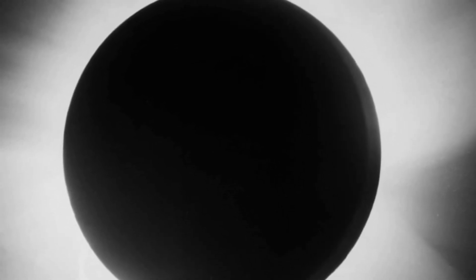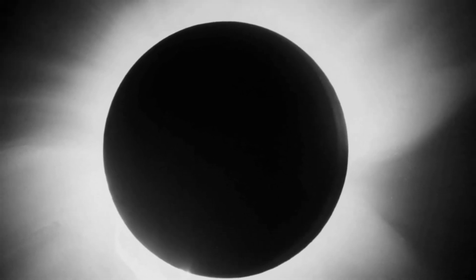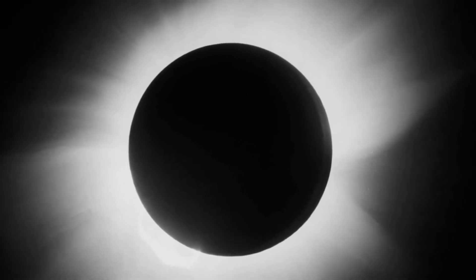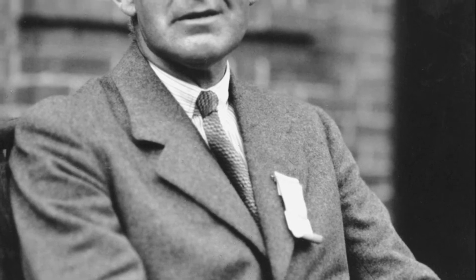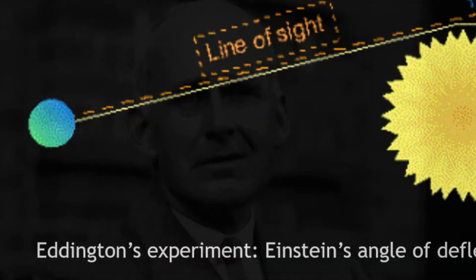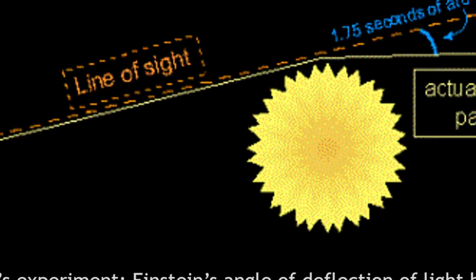Eddington received several scholarships as a result of his aptitude. He received both a bachelor's and master's degree before moving to Cavendish Laboratory to conduct research on thermionic emissions. When he was nominated to the post of chief assistant to the Royal Greenwich Observatory's Astronomer Royal, he created a new method for gathering statistical evidence based on the drift between two stars. This earned him the Smith's Prize in 1907, which also included a fellowship to Trinity College at Cambridge, where he had earned his bachelor's degree.